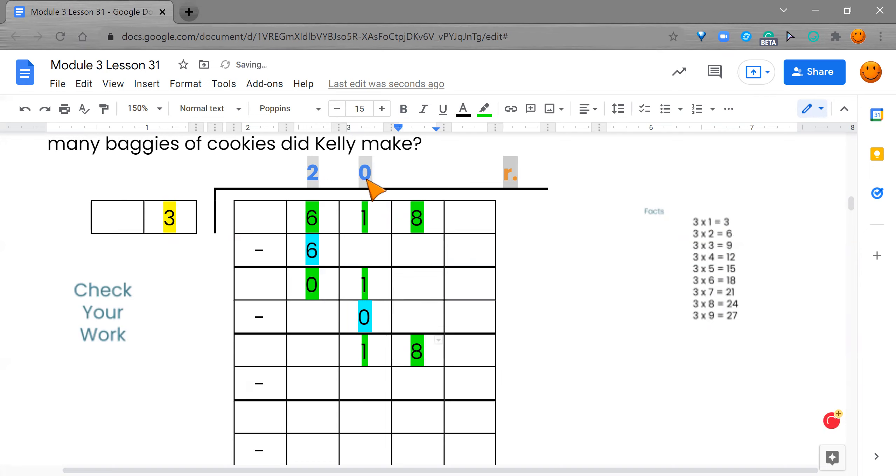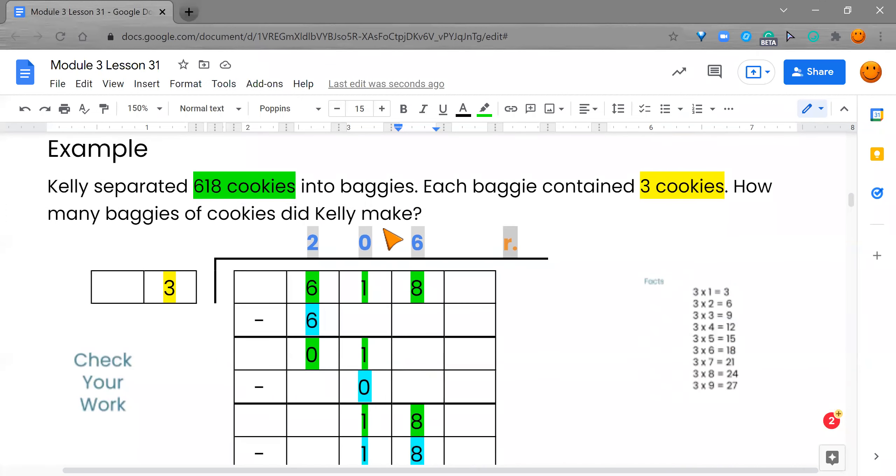It's important we put the zero there because it makes a big difference. Three goes into 18 how many times? I'm going to come down my 18 and see that. Oh, look, it goes in six times. So right up here, I'm going to put my six. Six times three is 18. And 18 minus 18 is zero. So it looks like Kelly has to make 206 baggies with three cookies each. So I'm going to quick jump into our check for understanding.